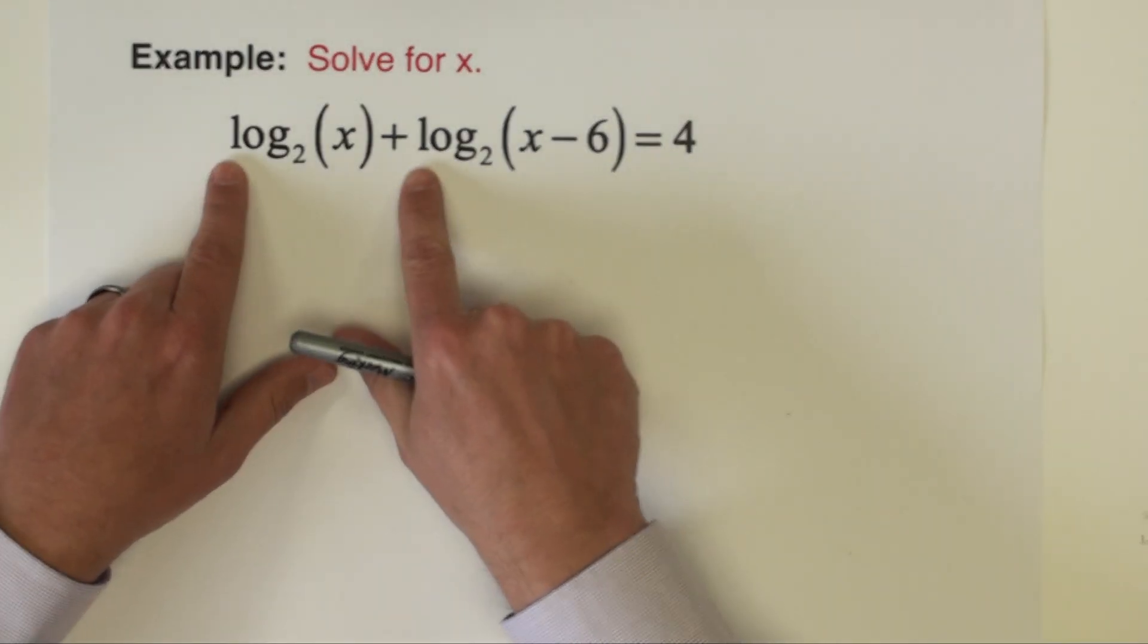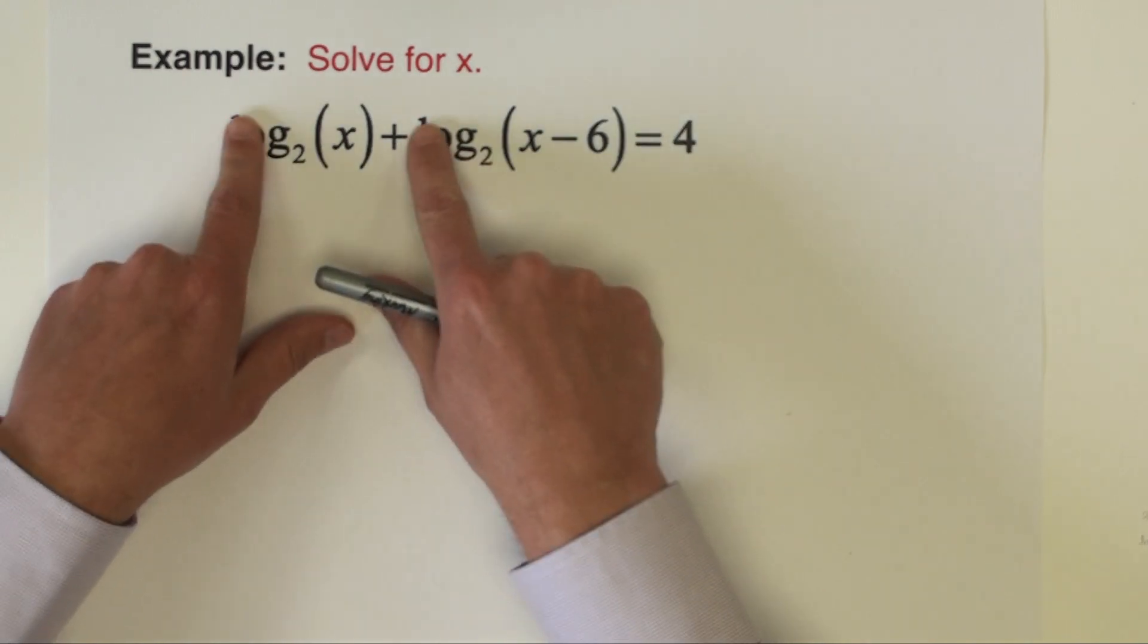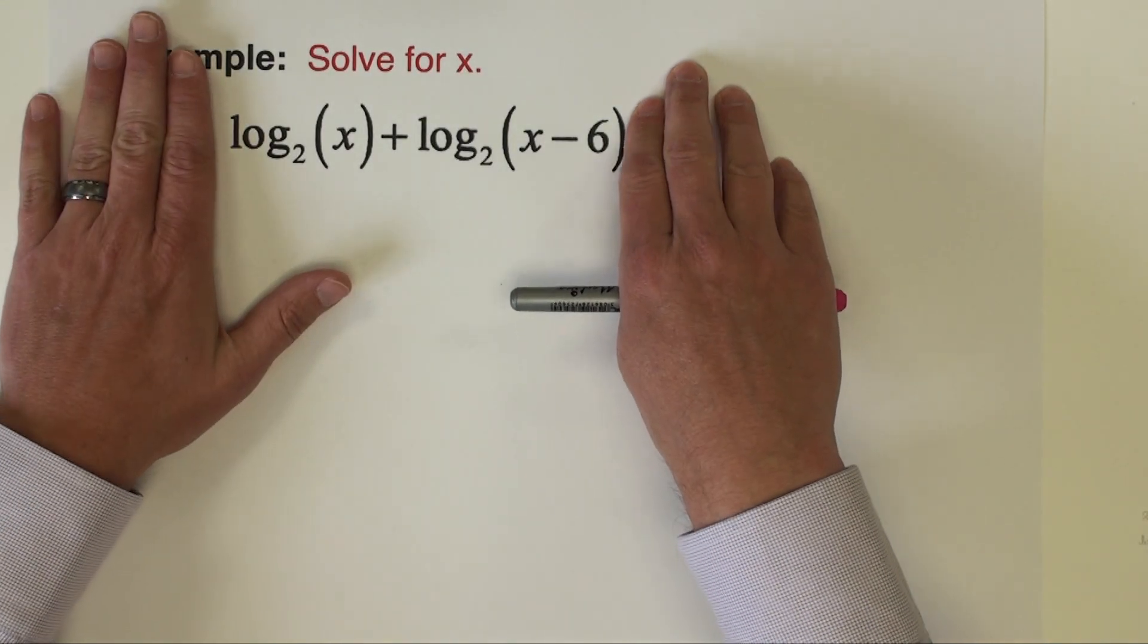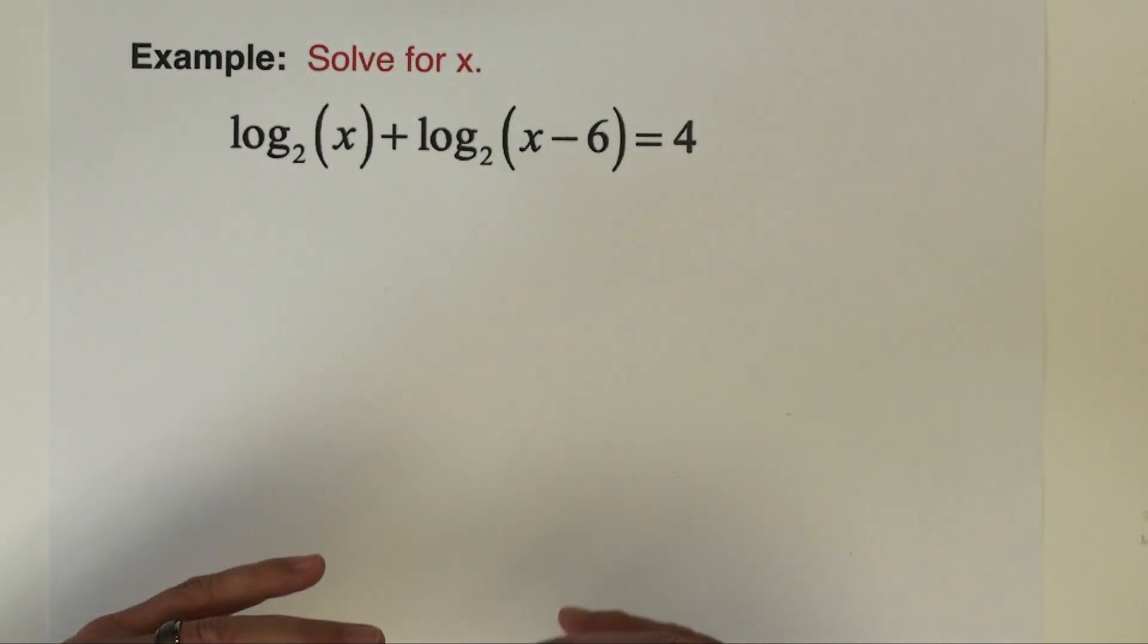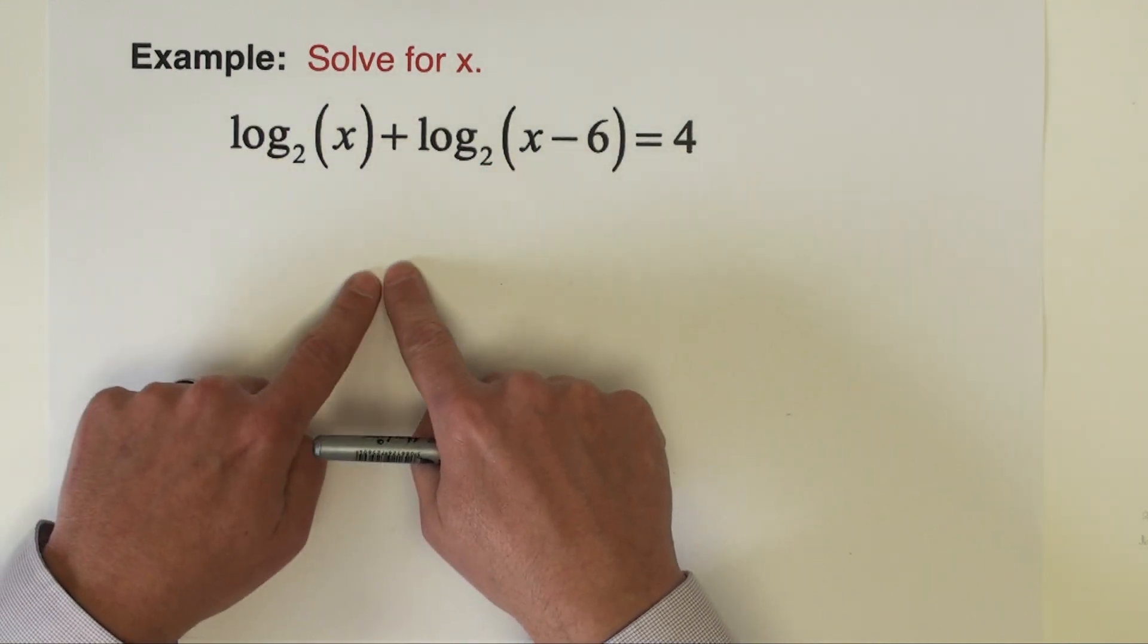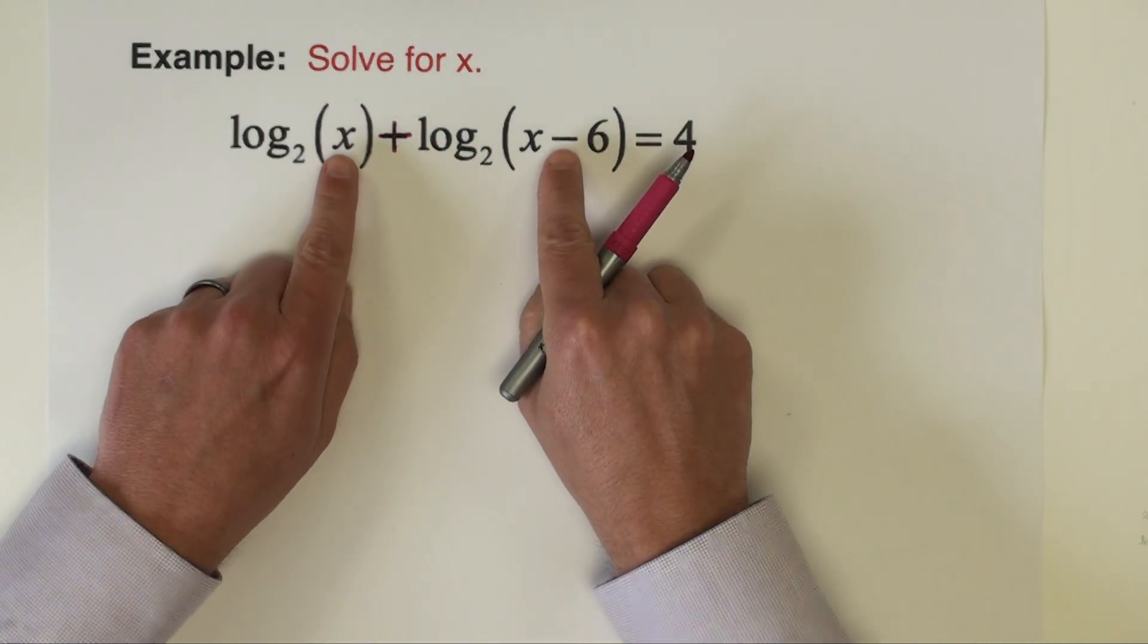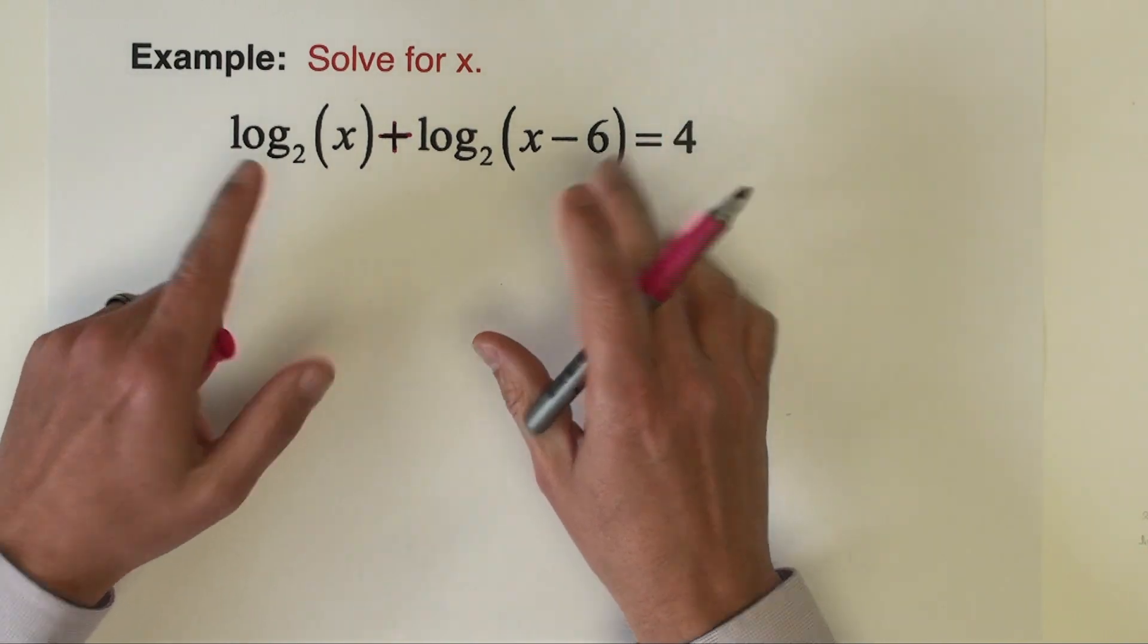I cannot exponentiate everything right now. I have base 2 logarithms, but I can't just stick a 2 under everything and cancel these out, because like the last video, we have to have a single logarithm. Right now I don't have a single logarithm on this side. So what I'm going to do first—and hopefully you've had practice doing this—is take these two logarithms and combine them into a single logarithm. The way I combine them is dictated by the sign that connects them.